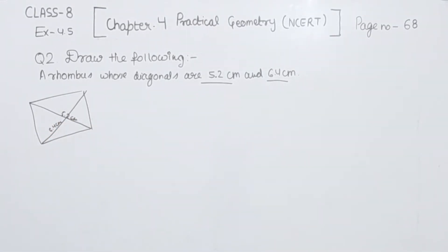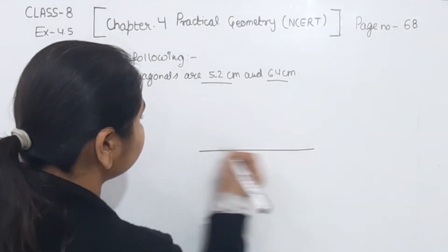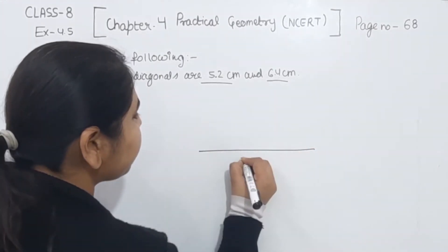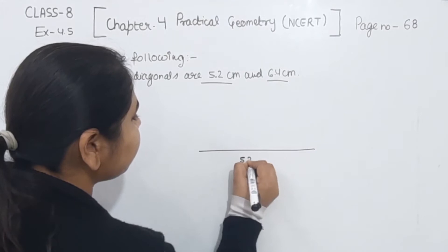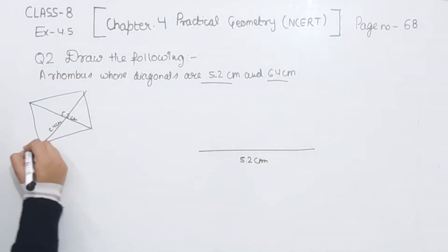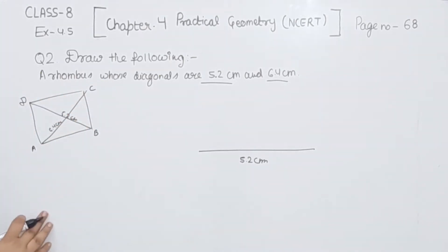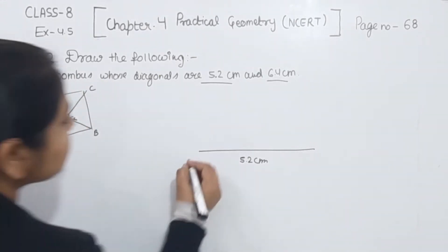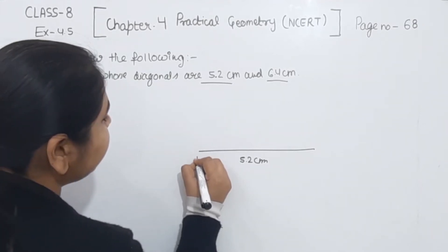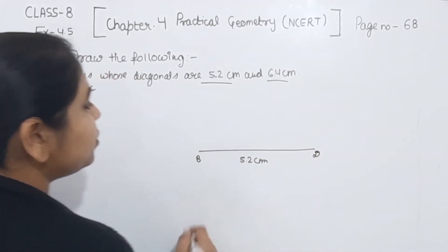Now first of all, we are going to draw a line segment of 5.2 cm. So this one I am having as 5.2 cm. Now I am going to name this as A, C and D — so this one I am labeling as BD. So I am going to write here BD = 5.2 cm.